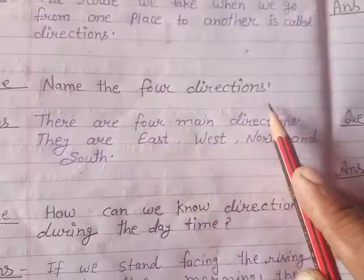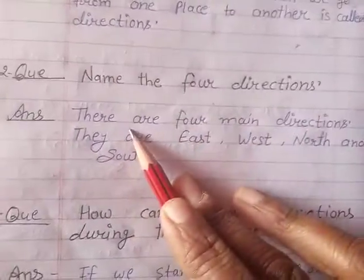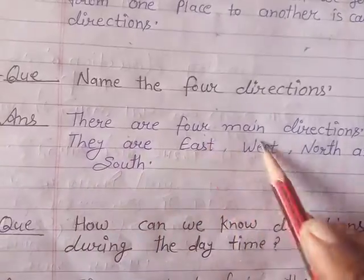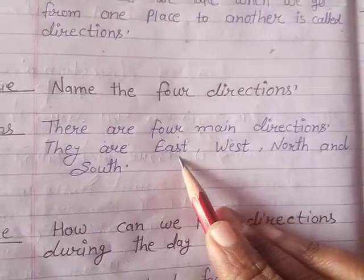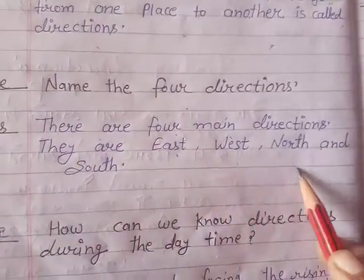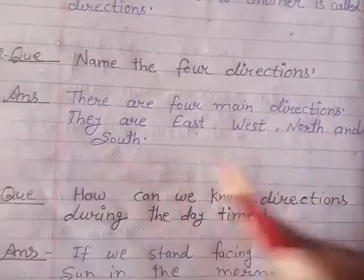Second question: Name the four directions. There are four main directions. They are east, west, north and south.